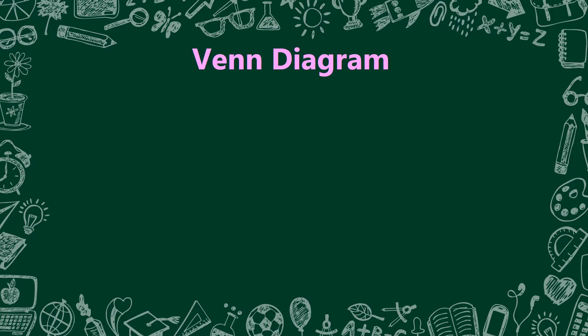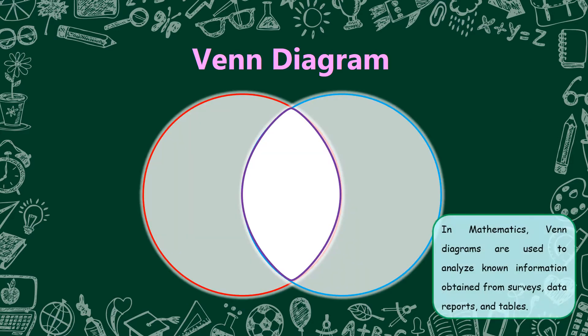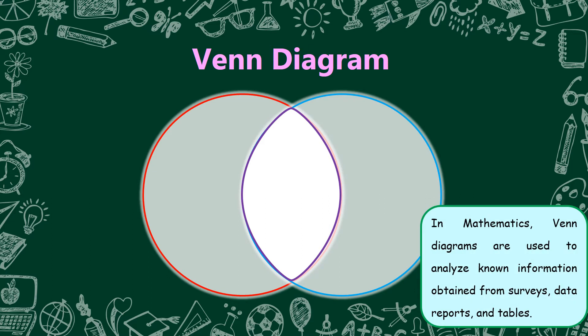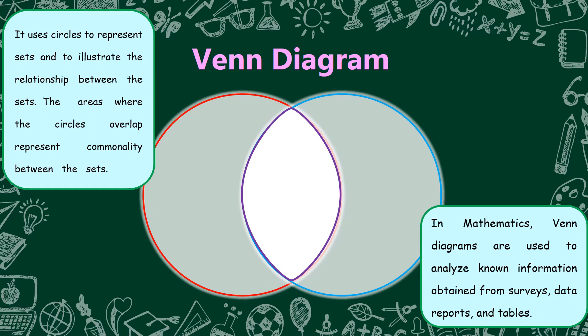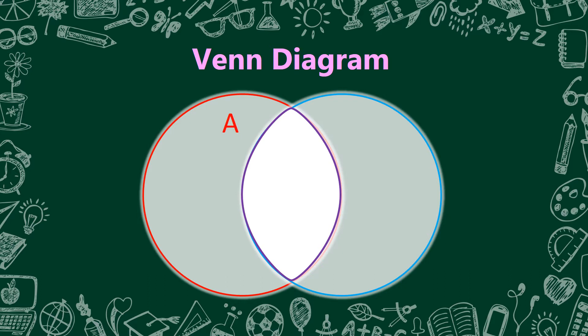What's in? This is a Venn Diagram. In mathematics, Venn Diagrams are used to analyze known information obtained from surveys, data reports, and tables. It uses circles to represent sets and to illustrate the relationship between the sets. The areas where the circles overlap represent commonality between the sets. For example, the red circle is our set A and the blue circle is our set B. The part where the circles overlap, or all the elements inside the violet line, are all the common elements present in both set A and set B.